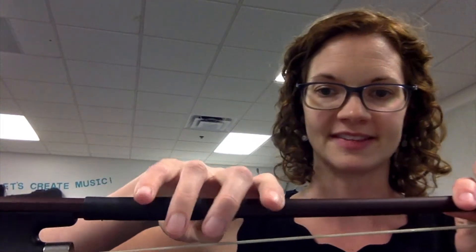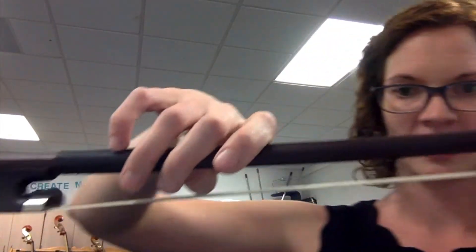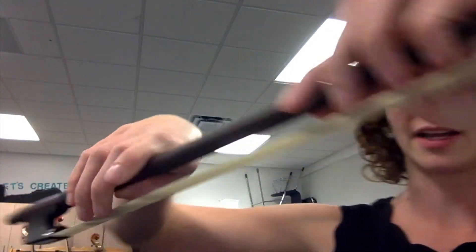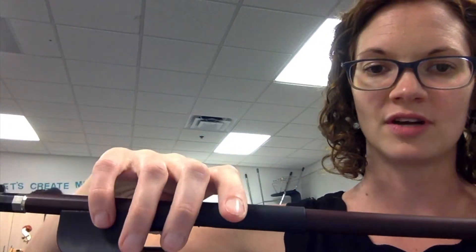Instead of holding your bow up at the stick, either like this if you play violin or viola, or like this if you play cello or bass, we're just going to slide that exact same position down towards the frog of your instrument.